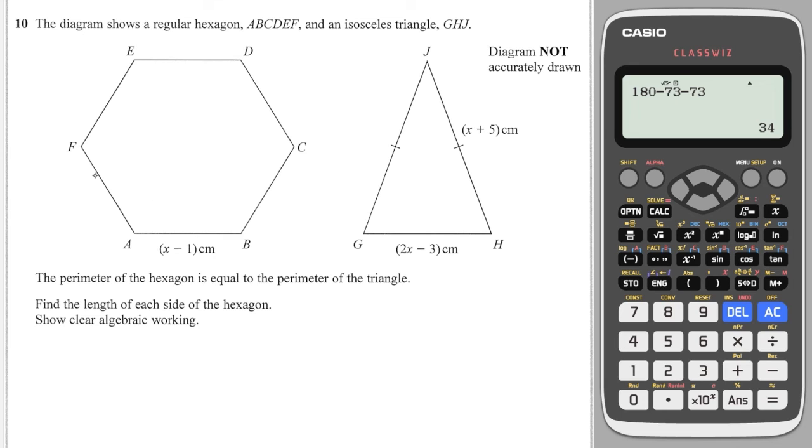Another question where we've got to form our own equation. We've got a hexagon which is regular, and an isosceles triangle. It says the perimeter of the hexagon is equal to the perimeter of the triangle. Work out the length of each side of the hexagon. Well, all of these are the same because it is a regular hexagon, which means the perimeter of that hexagon will be 6 lots of x minus 1. And we know that because it's an isosceles, then this side is the same as this side, which is x plus 5. So if I were to add up the perimeter of this triangle, we know it's going to equal the perimeter of the hexagon, and it's going to be x plus 5 plus x plus 5 plus 2x minus 3.